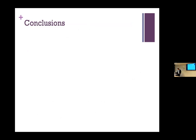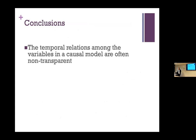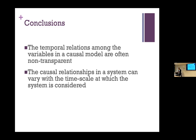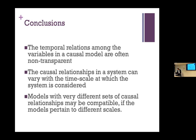In conclusion: I've noted ways in which the temporal relationships among variables in a model are not always transparent, and I think it's valuable to think carefully about what those relationships are. I've argued that the causal relationships in a system can vary with the timescale at which you consider it. And finally, it is possible on this picture that models with very different-looking causal relationships can be compatible. I speculated that perhaps this is what's happening in the network and latent variable case.